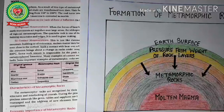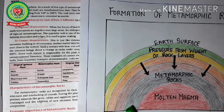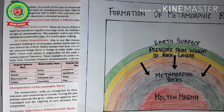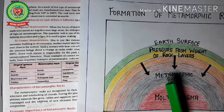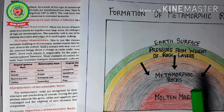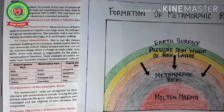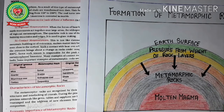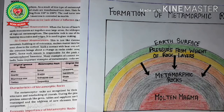Now let us see some characteristic features of metamorphic rocks. Metamorphic rocks are more compact, harder and bulkier than the original rocks. Most metamorphic rocks are impermeable — they do not allow water to pass through them. These rocks do not have any fossils of animals or plants. These rocks are rich in valuable minerals like gold and silver. Gems like diamonds are also found in metamorphic rocks.